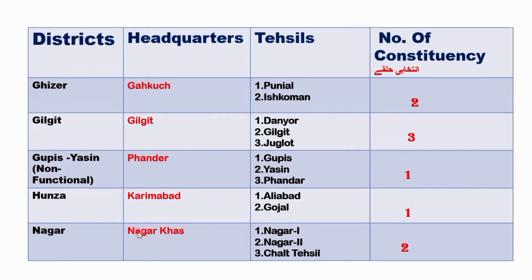Now we will see the number of Tehsils and their names in each district. In Ghizer district, there are two Tehsils: Punial Tehsil and Ishkoman Tehsil. In Gilgit, there are three Tehsils: Danior Tehsil, Gilgit Tehsil, and Jigulor Tehsil.